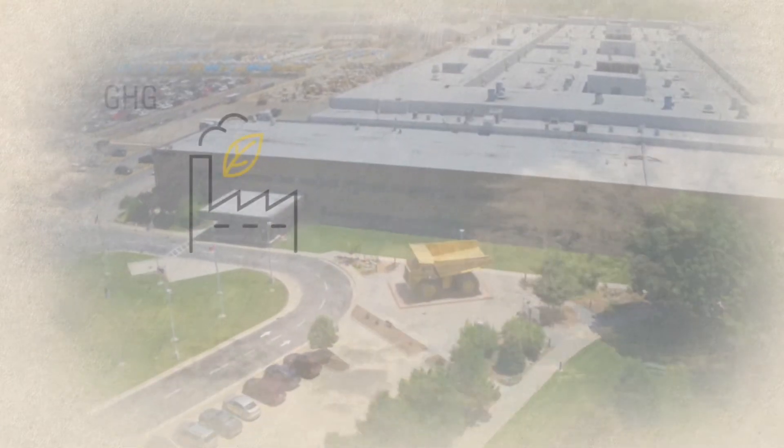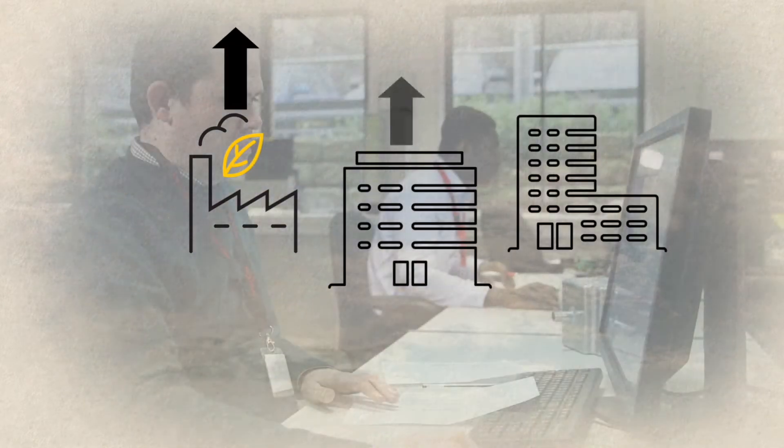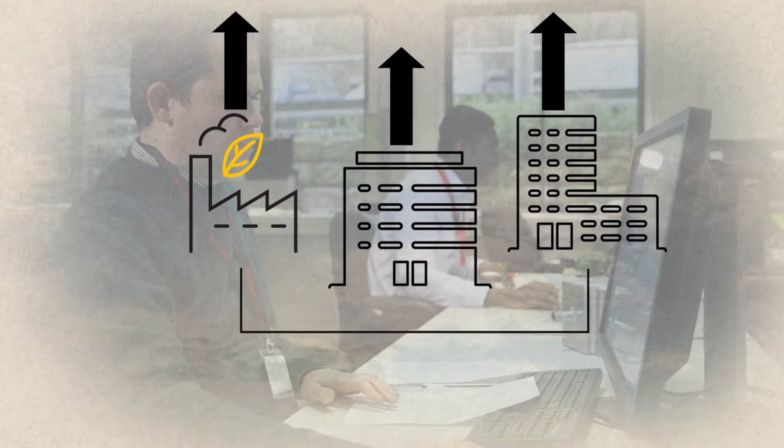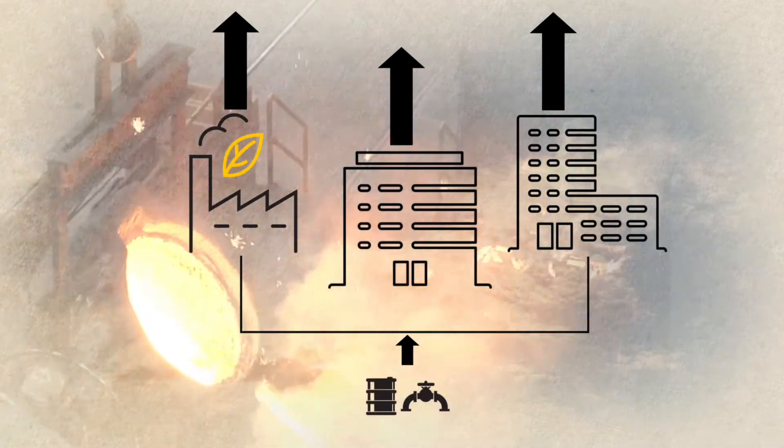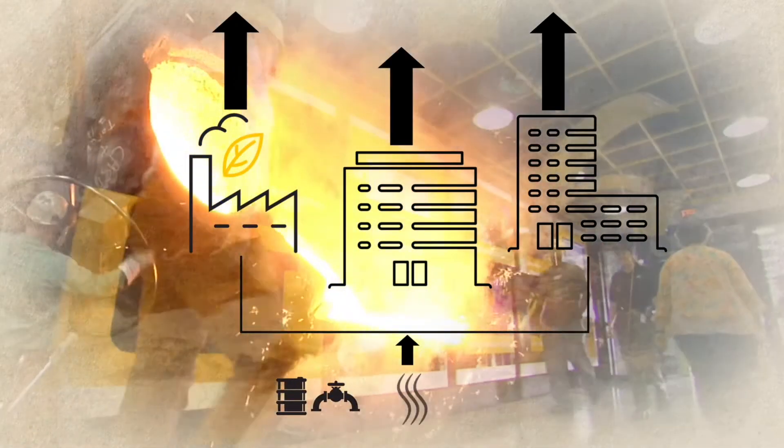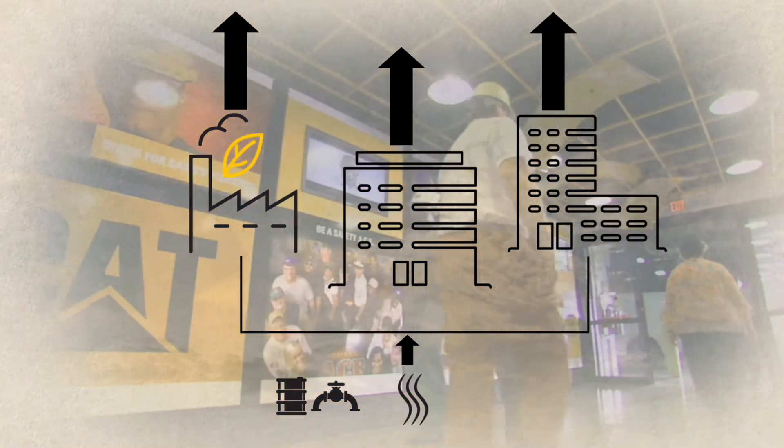Caterpillar factories, offices, and logistics facilities generate GHG directly through the consumption of fuels used for manufacturing processes and to heat our buildings, and indirectly through using electricity.